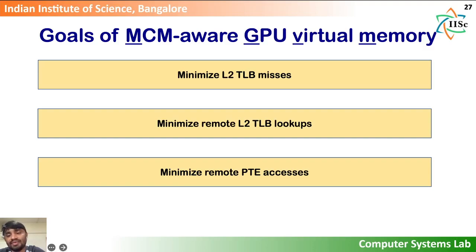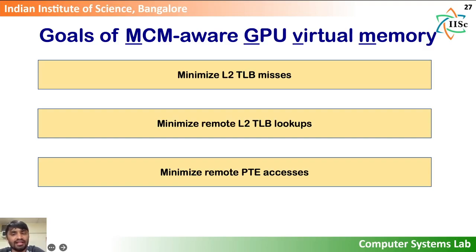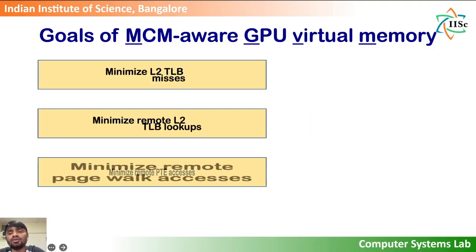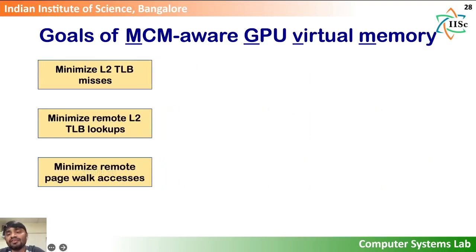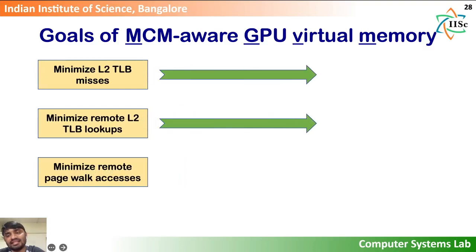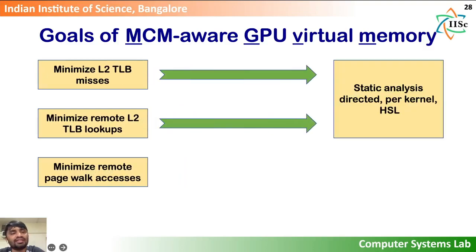One, we need to minimize L2TLB misses. Two, we have to limit the number of remote L2TLB lookups. And three, we have to minimize the number of remote PTE accesses to reduce the page walk latency. To this end, we first propose static analysis directed HSL to tackle the first two goals.